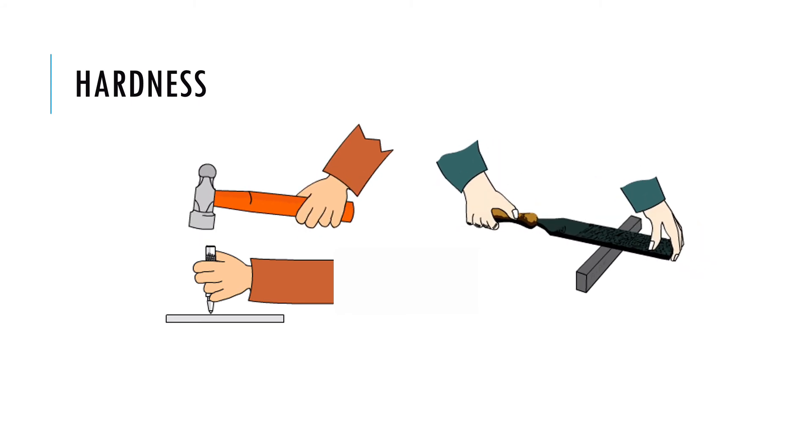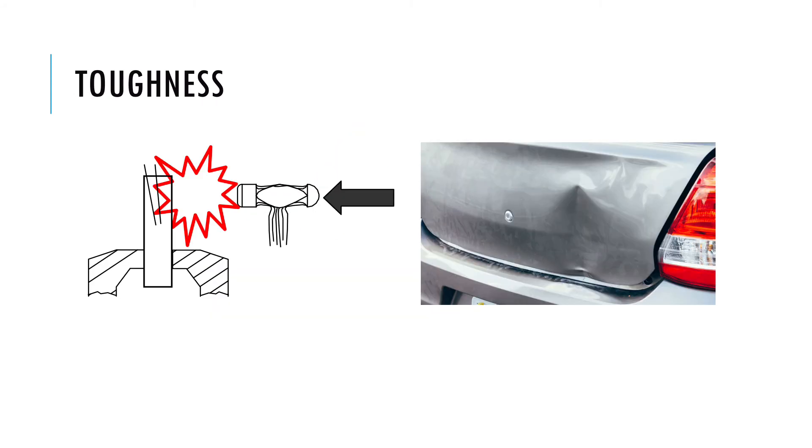Toughness is the property of a material that it does not break under a sudden shock. We need the property of toughness where there is a need to absorb energy produced by impact or shock, for example car bodies.